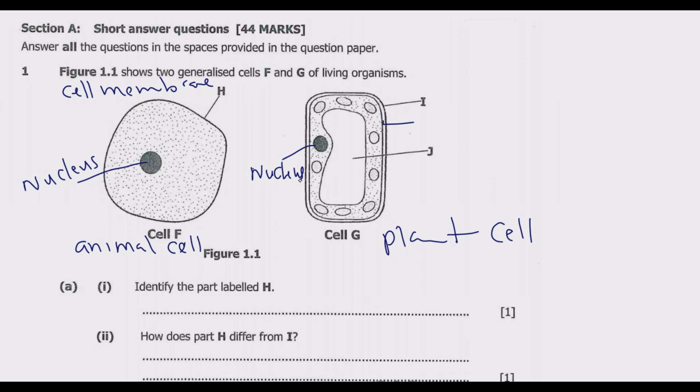I will just focus on the key parts. Then what is in I? I is the outer space, which is the cell wall. Then we have J. What is J? J is the central vacuole.